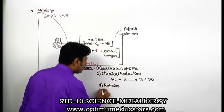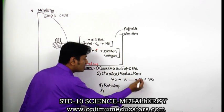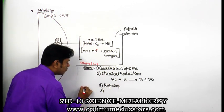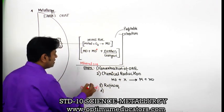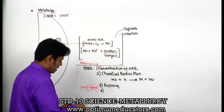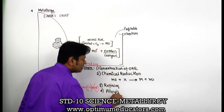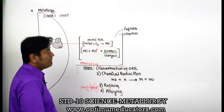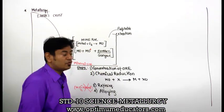After refining, I will do a very important activity - because metals are highly reactive, I cannot keep the metal exposed. So, I will do alloying. These are the steps involved in the unique process known as metallurgy. Now we are going to see the first major point, that is concentration of ore.